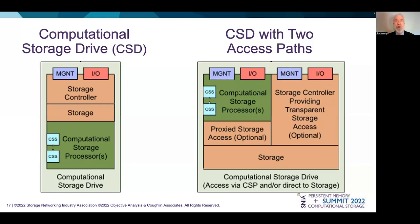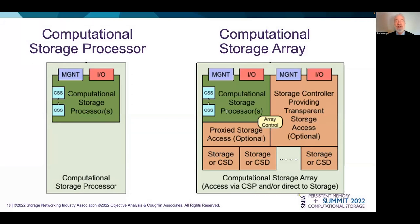This slide shows two of the four categories of computational storage that SNIA's Computational Storage Task Work Group, or TWIG, has defined: a computational storage drive, which is an SSD with a processor, and a similar drive that allows the host to either communicate with the processor or go directly to the data. The next slide shows the other two device types: a computational storage processor that manages storage and other drives, and a computational storage array which has a number of SSDs or computational storage devices, with array control that may perform computation on its own.